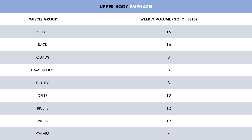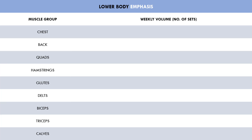In this next example, let's take this same trainee and reallocate their volume to emphasize the lower body. Once again, the overall weekly volume isn't going to be much different — just the distribution will change. We have eight sets for the chest and back, 16 sets for the quads, hamstrings and glutes, four direct sets for the delts, biceps and triceps, and 12 sets for the calves. So clearly, we have allocated more volume for the quads, hamstrings, glutes and calves, and less volume for the chest, back, delts, biceps and triceps.